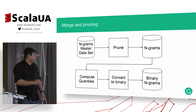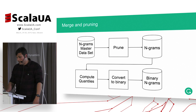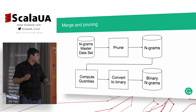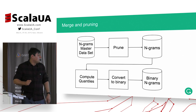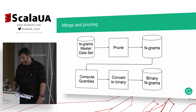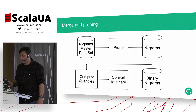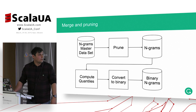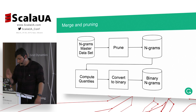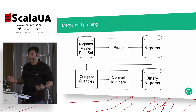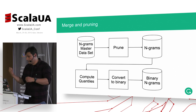For this we have a procedure called pruning. We also compute quantiles to characterize the distribution of frequencies. The most interesting part is converting to binary. If you want to know more about this, I'd refer you to a talk by my colleagues from the last DevOps conference — there's a link to the video in the presentation. Basically it's a perfect hash-based data structure which allows us to compress and deploy this data.